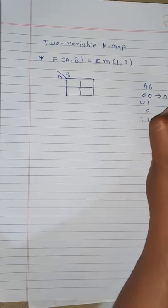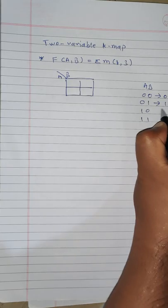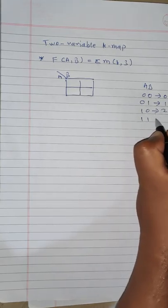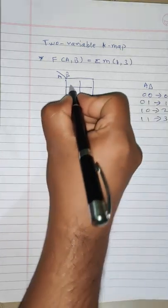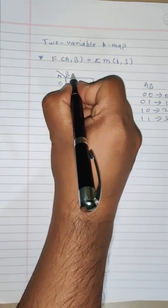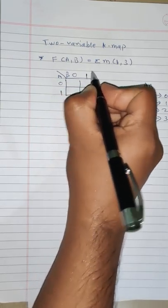Now, 0 0 in decimal is 0, 0 1 is 1, 1 0 is 2, and 1 1 is 3. Variable a can take only two values, either 0 or 1, and b will also take values 0 and 1.